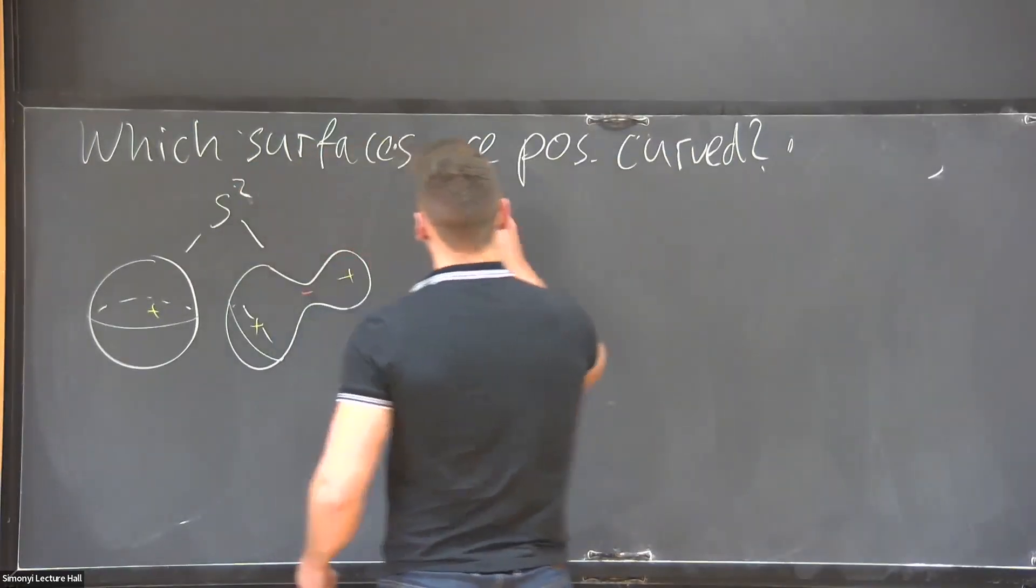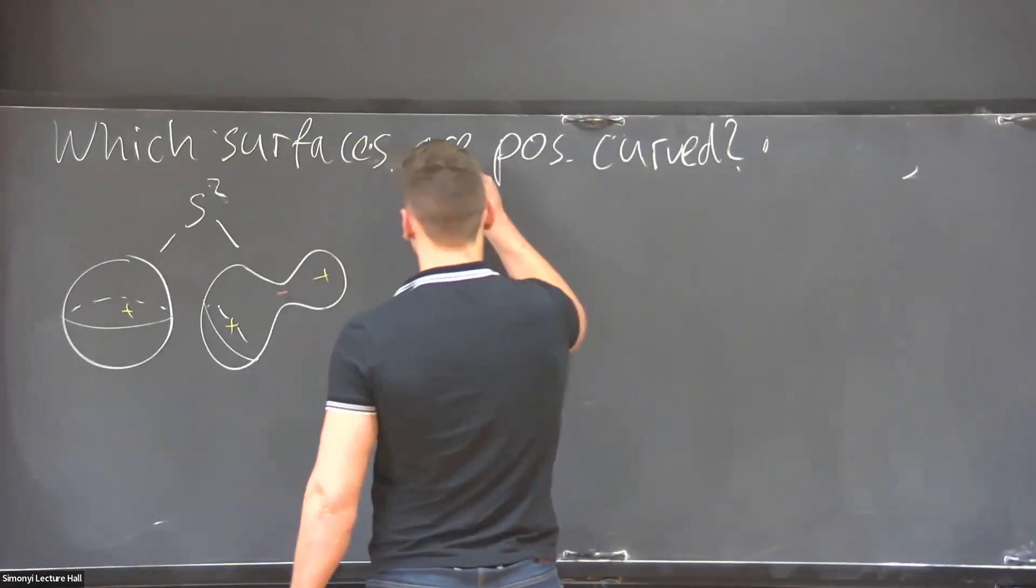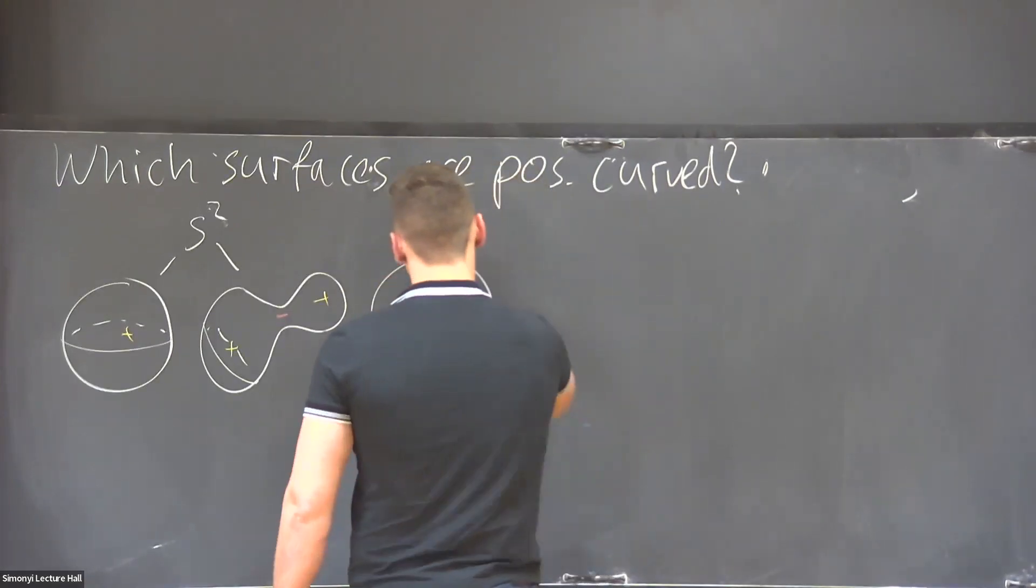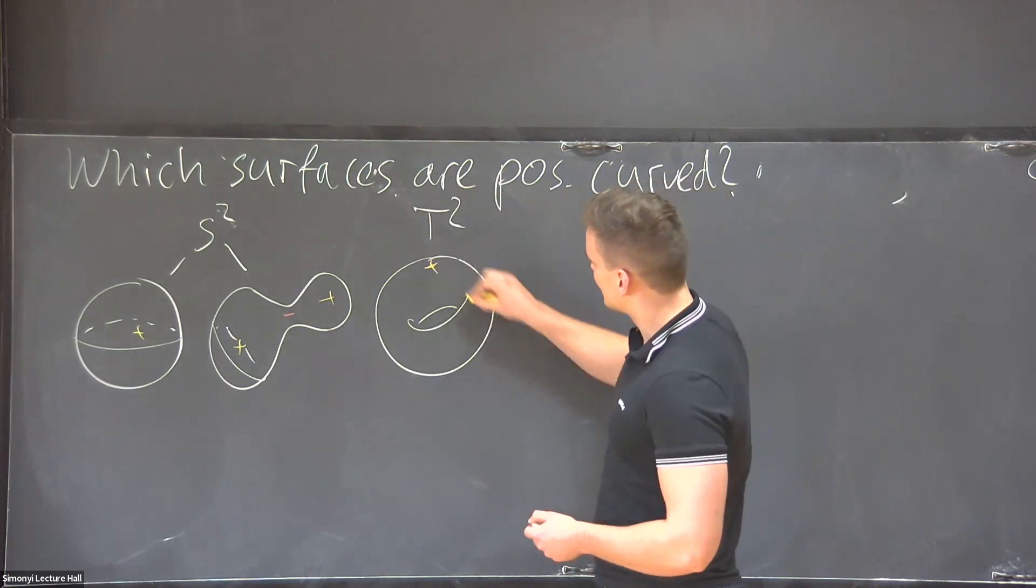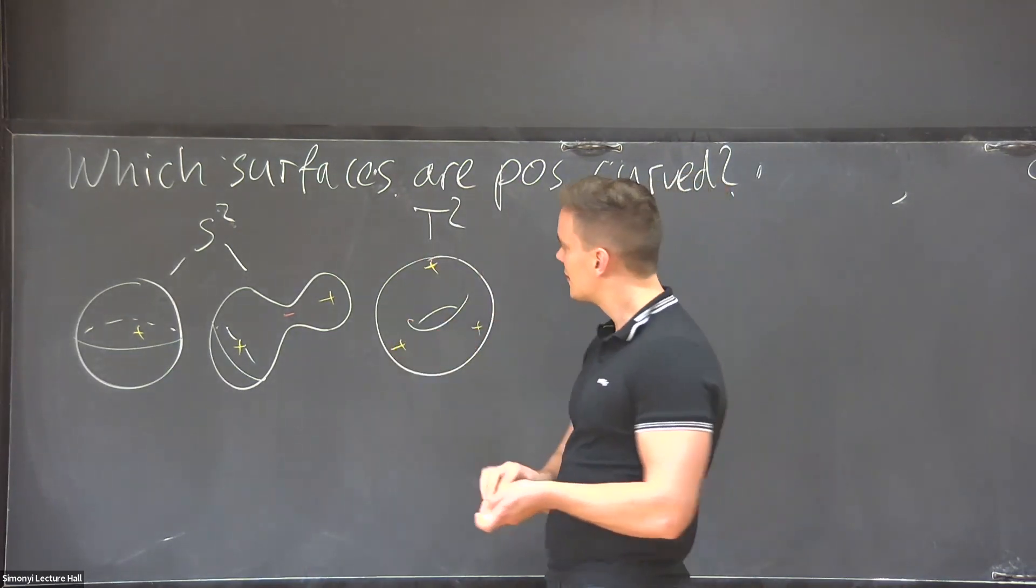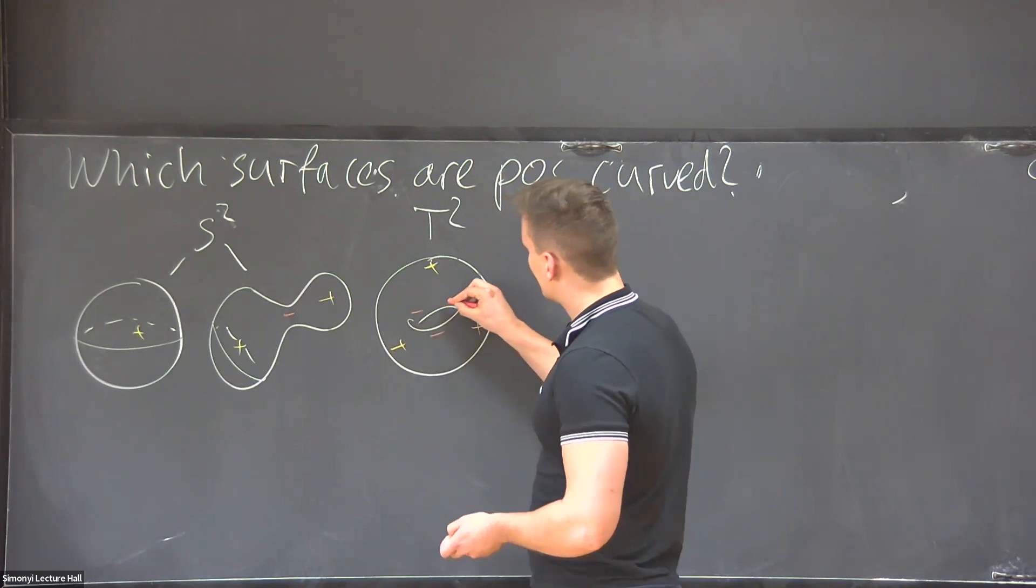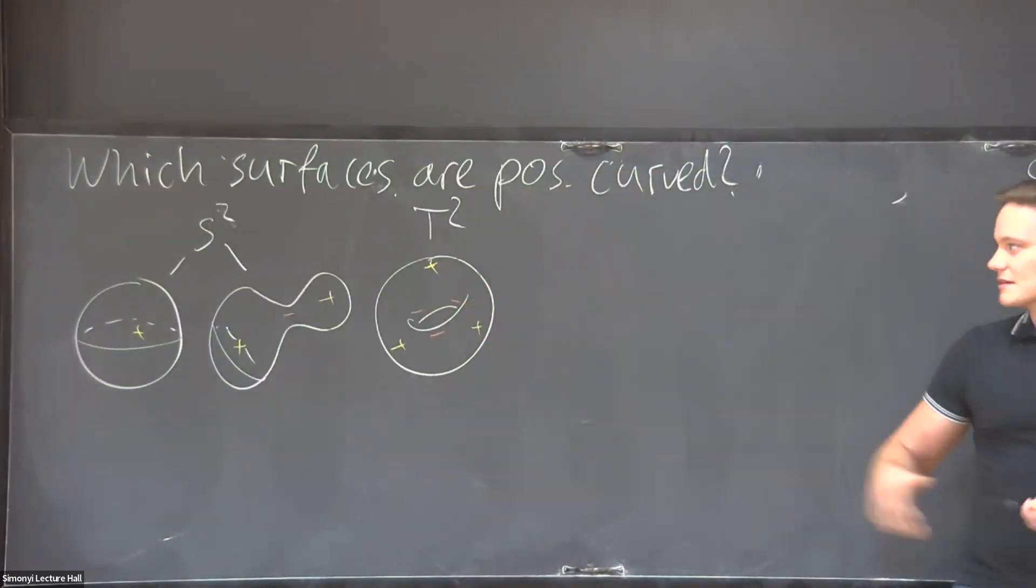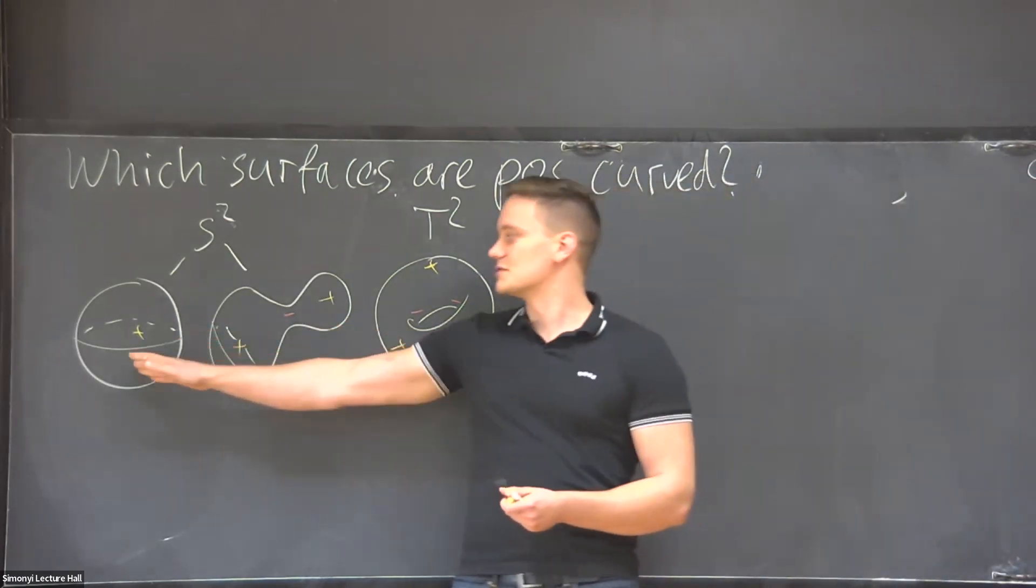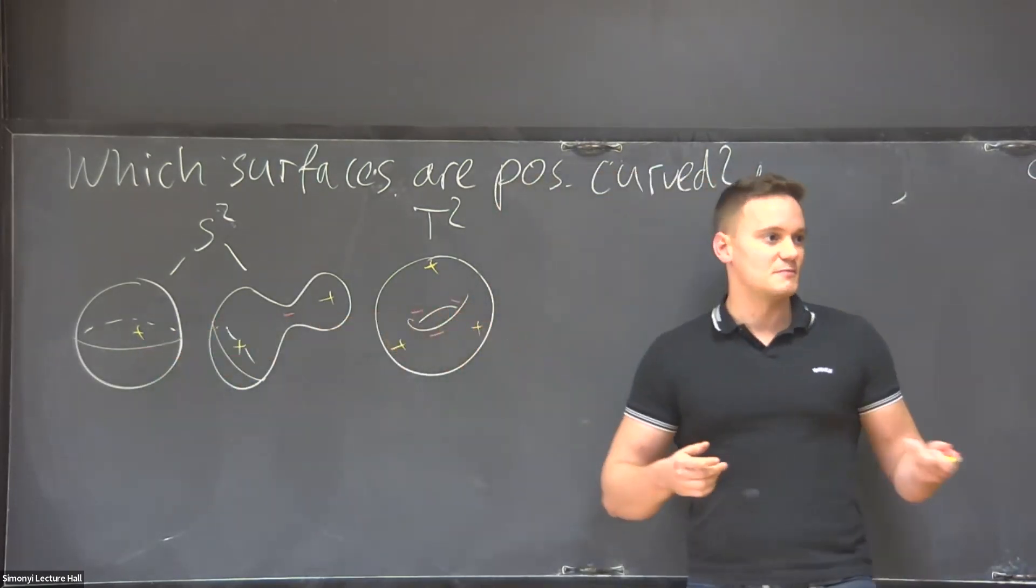And the same we can of course do also for other topological spaces, so let's take a torus. In this picture, it would have here on the outside a bunch of positive curvature. But then here on the inside, the curvature will be negative. Then one natural question would be, can we do a similar deformation like to go from here to here to make the torus instance positively curved everywhere.